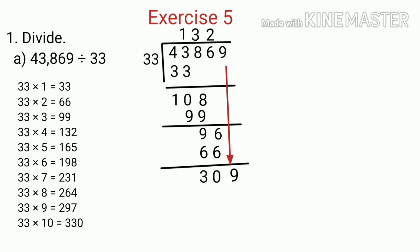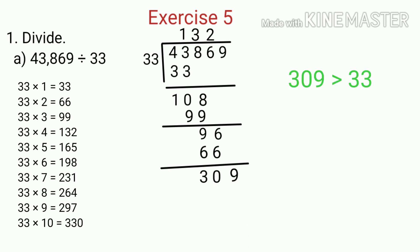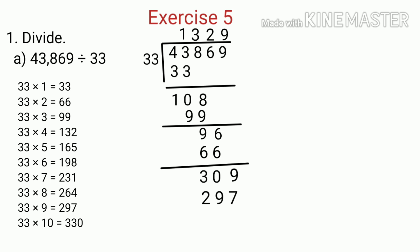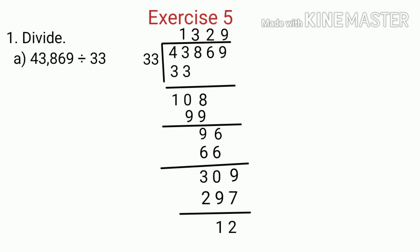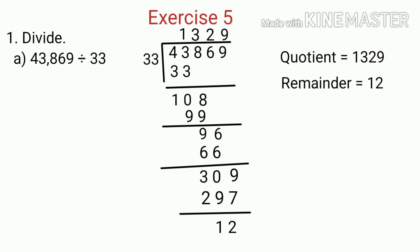And then we compare 309 and 33. 309 is greater than 33, so we find the product of 33 which is equal to, or less than, and nearest to 309. The nearest product is 297. So we write 9 in the equation, because 33 multiplied by 9 is 297. And then we subtract 297 from 309, which is equal to 12. Now since there are no more digits to bring down, we can stop the division here. So when we divide 43,869 by 33, we get the quotient as 1,329 and the remainder as 12.